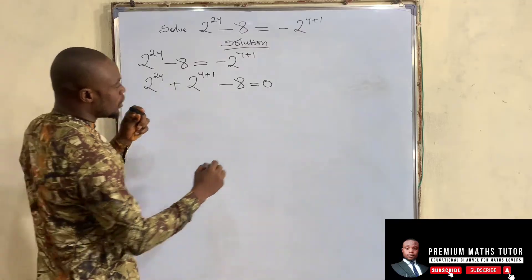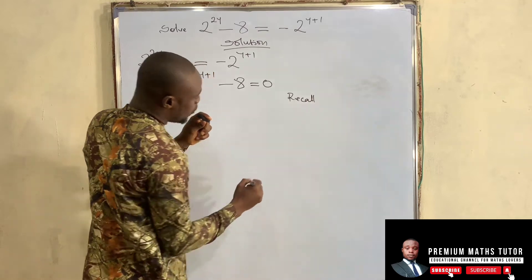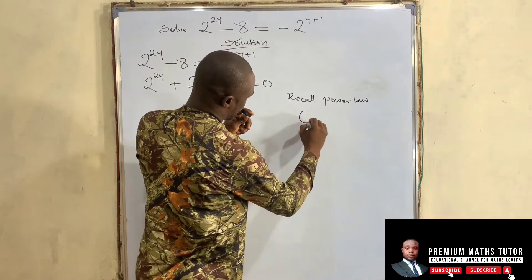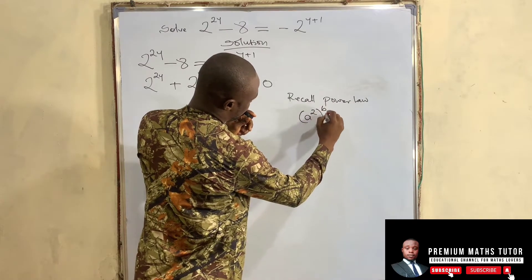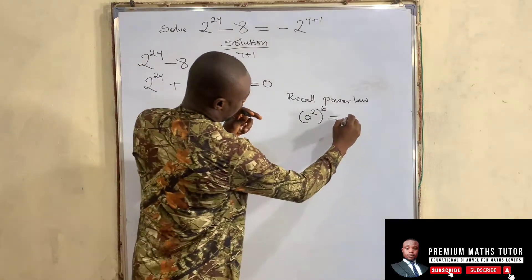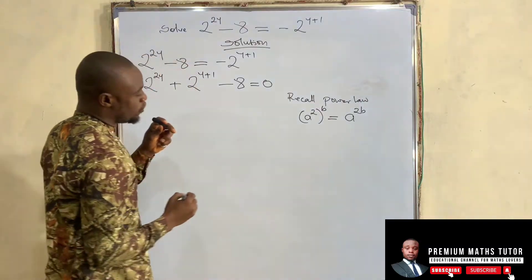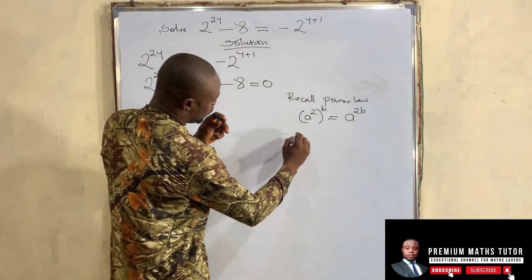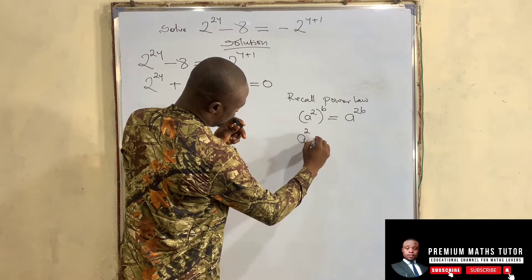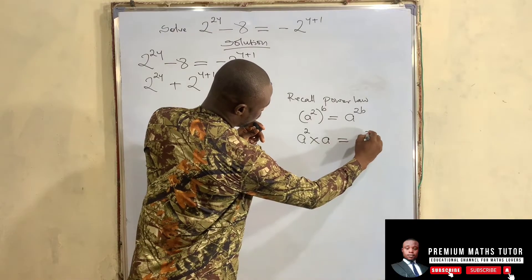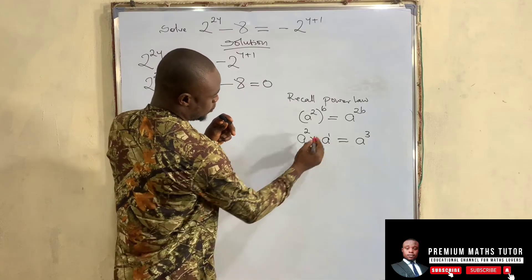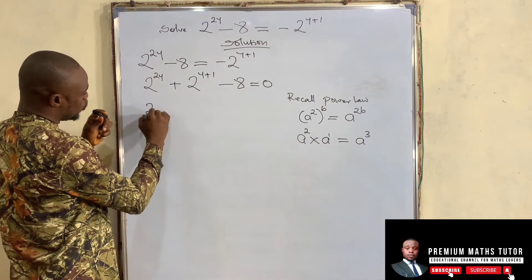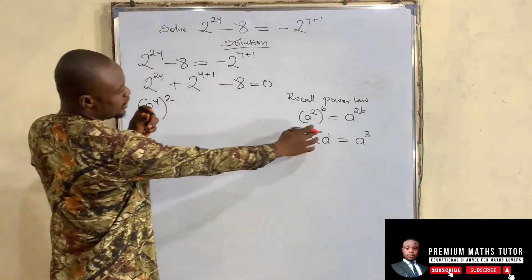Now recall indices — particularly the power law, which says: for (a to the power of 2) multiplied by b, the powers multiply and you get a to the power of 2b. Also recall the addition law of indices: if you have a squared multiplying a, this becomes a cubed, because this a has a power of one so the powers add up.